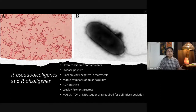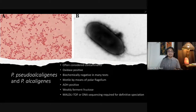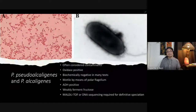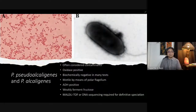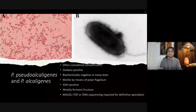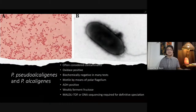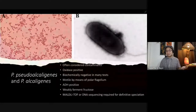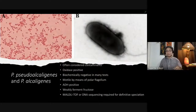Pseudomonas pseudoalcaligenes and Pseudomonas alcaligenes are also contaminants. They are oxidase positive and biochemically negative in many tests except ADH. They can weakly ferment fructose, and it is difficult to identify them because they are negative in many biochemical tests. MALDI-TOF or DNA sequencing is needed, which is not routinely done.